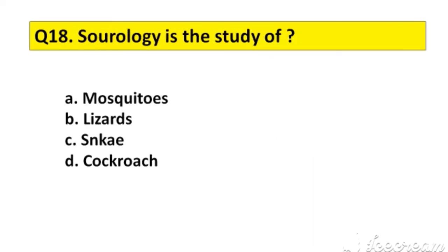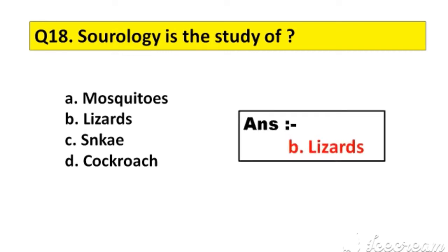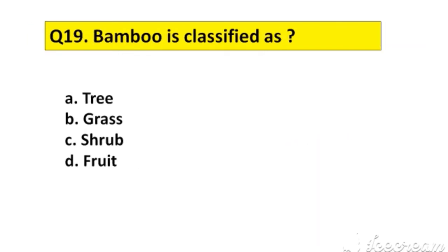Question number 18. Saurology is the study of: A. Mosquitoes, B. Lizards, C. Snakes, D. Cockroach. The right answer is option B, Lizards.